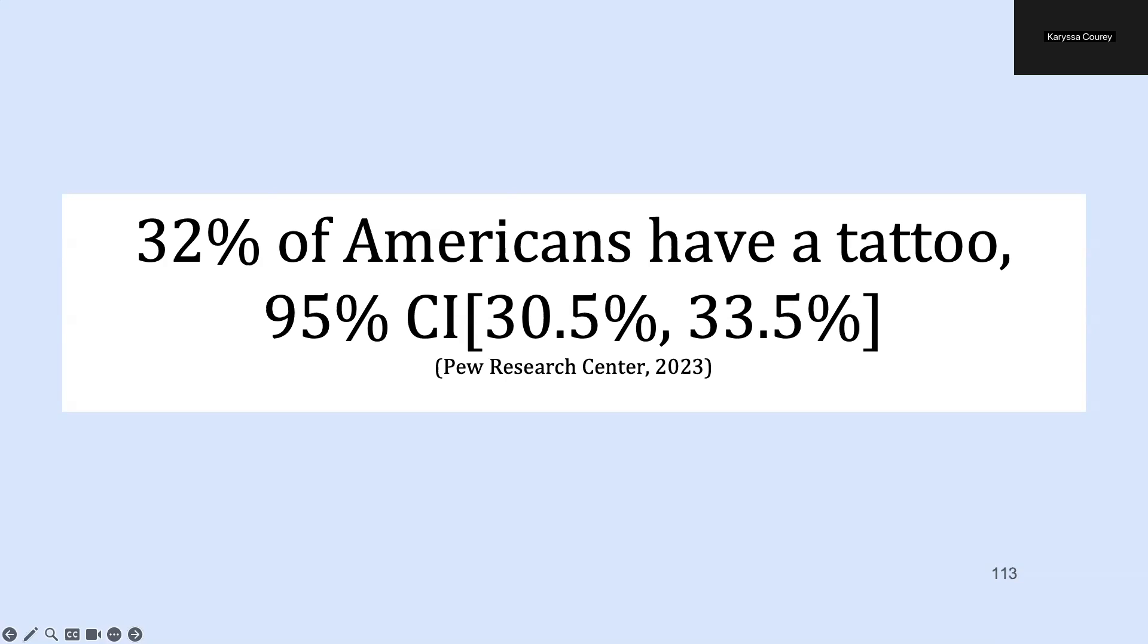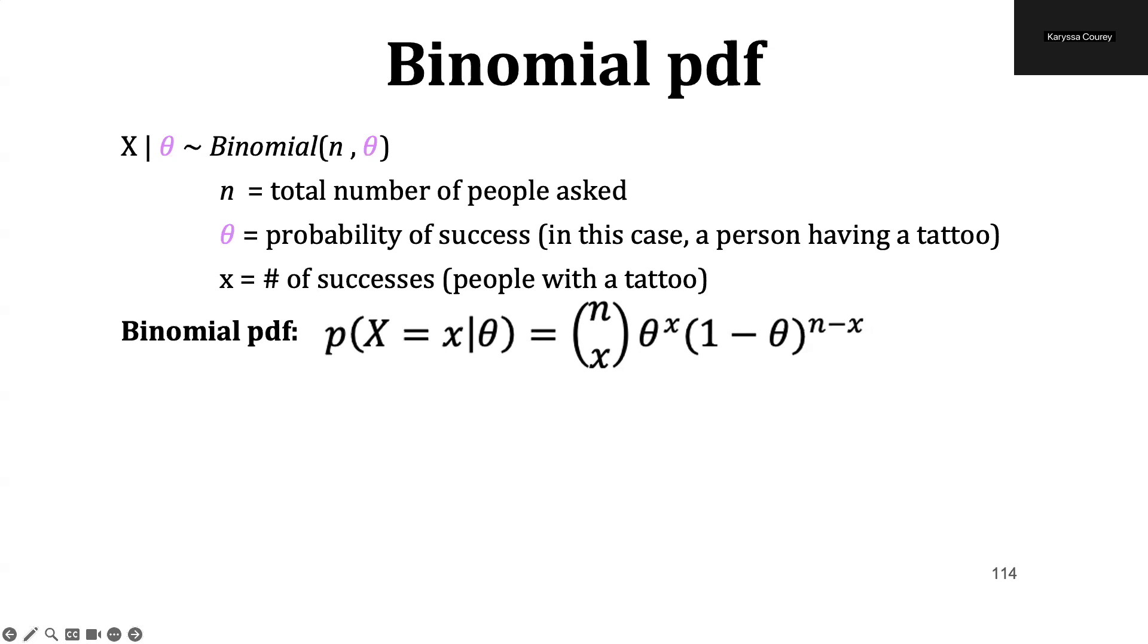Let's pause and talk about the binomial distribution. We may choose to use a binomial function when the data generating process produces dichotomous values or outcomes. So for example, if you think about flipping a coin, it could either land on heads or tails. If you consider a selection process, you can either hire someone or not hire them. So in this case, if we ask people whether or not they have a tattoo, they either have a tattoo or they do not have a tattoo. So the binomial distribution is appropriate here.